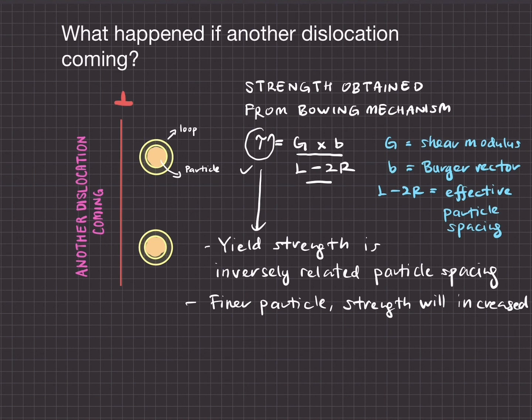One more thing that is very important is that the closer together the particles are, the strengthening will become more effective since it will be more difficult for dislocations to do the bowing mechanism.